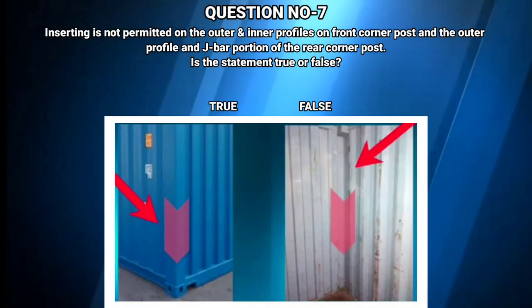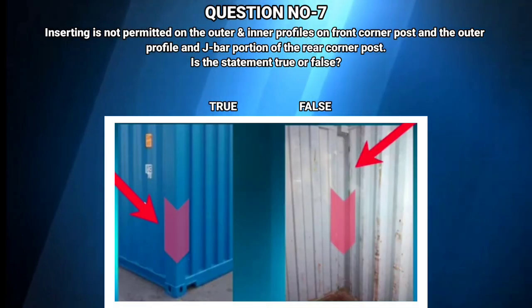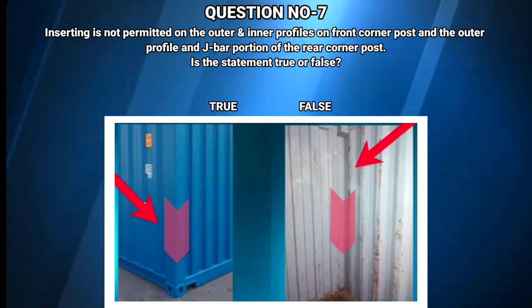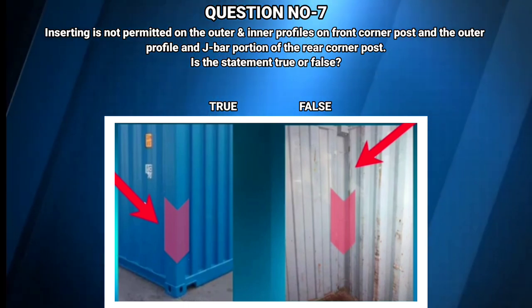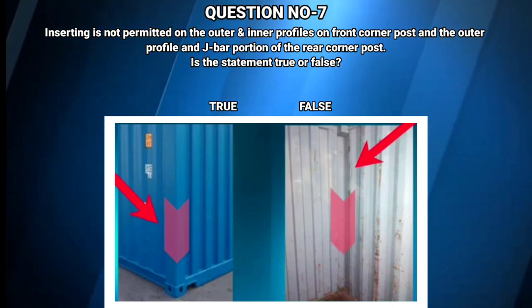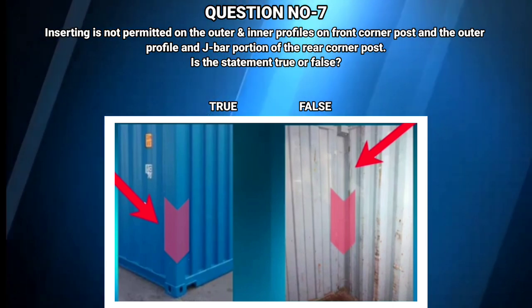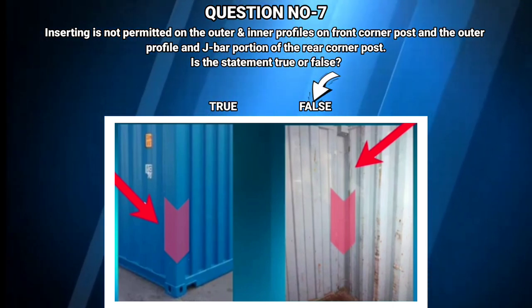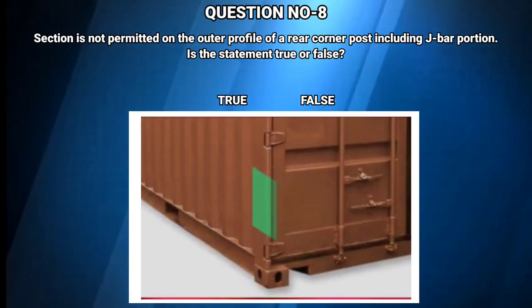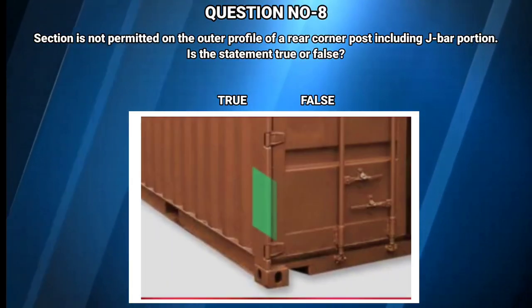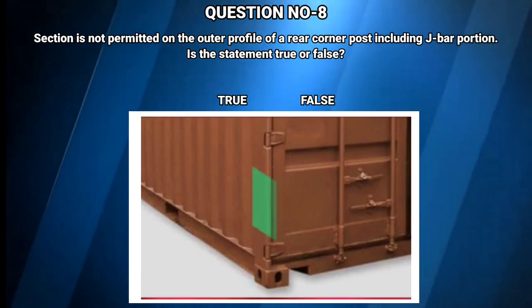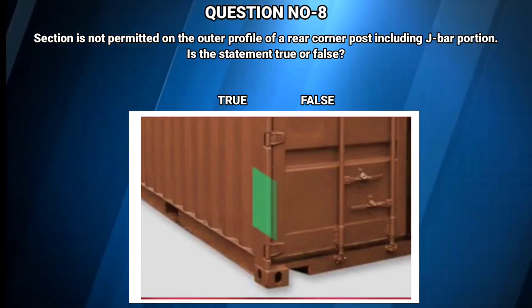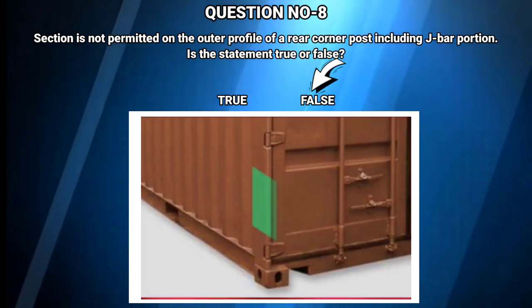Question number 7: Inserting is not permitted on the outer and inner profiles on the front corner post and the outer profile and J-bar portion of the rear corner post. Is the statement true or false? The answer is false. Question number 8: Sectioning is not permitted on the outer profile of a rear corner post including the J-bar portion. Is the statement true or false? The answer is false.